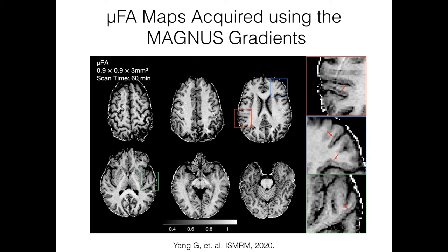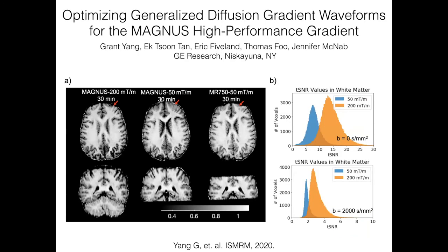People have been very interested in using these techniques to look at gray matter, but not much has been shown so far — partly due to resolution limitations and inability to get intrinsic gray matter signal. With ongoing hardware developments, we'll start to see that. This example shows the SNR boost from the Magnus gradient compared to the 50 mT/m gradients we were limited to on the clinical scanner.